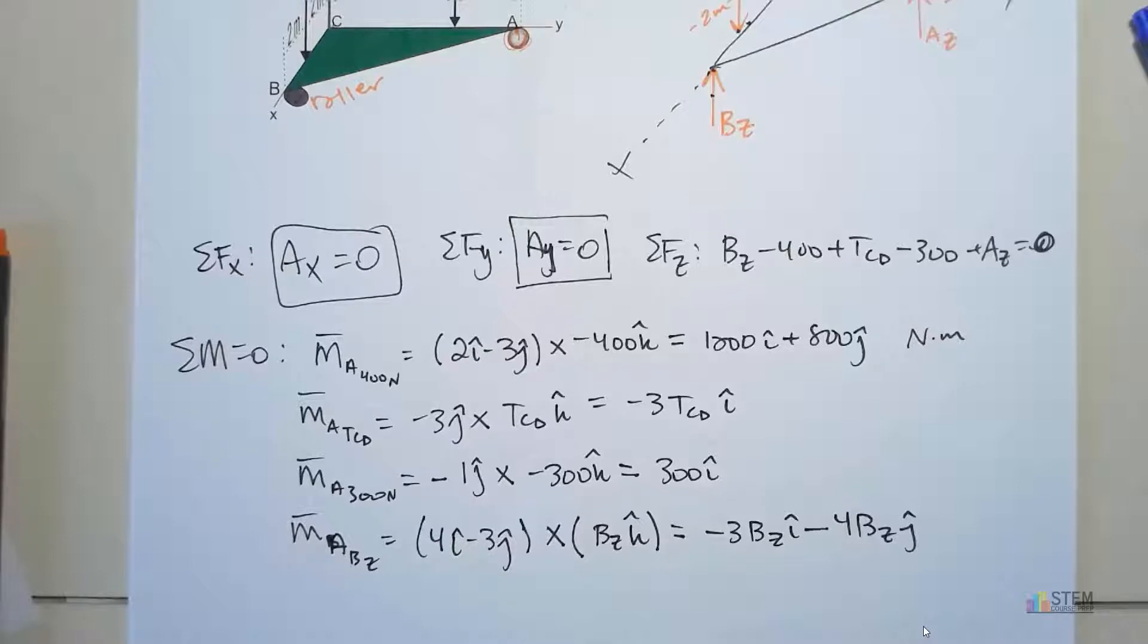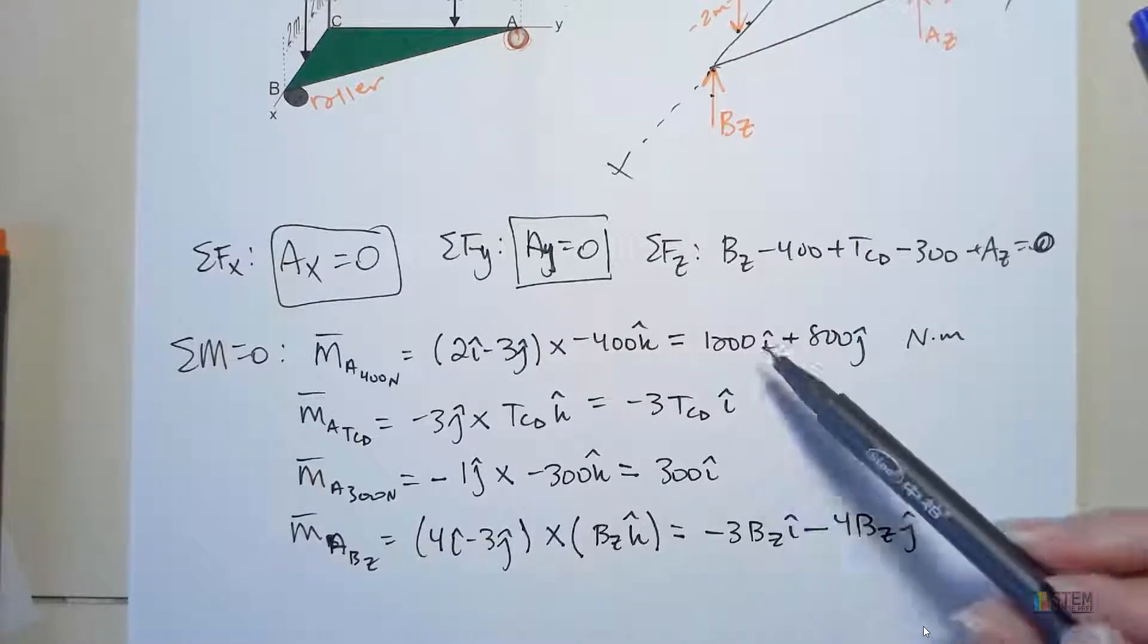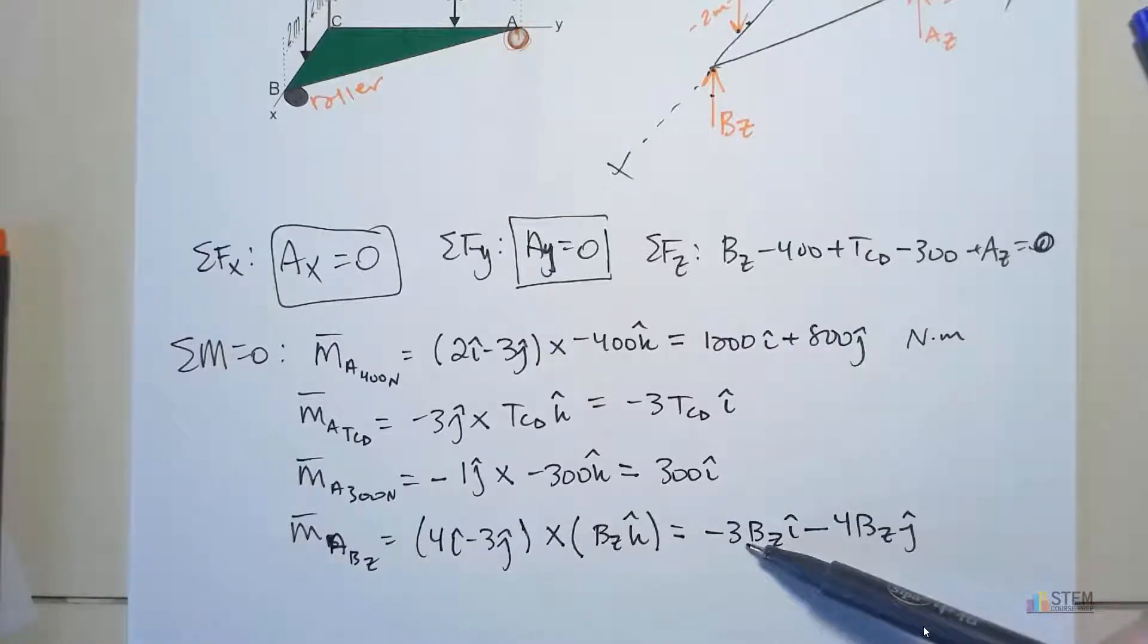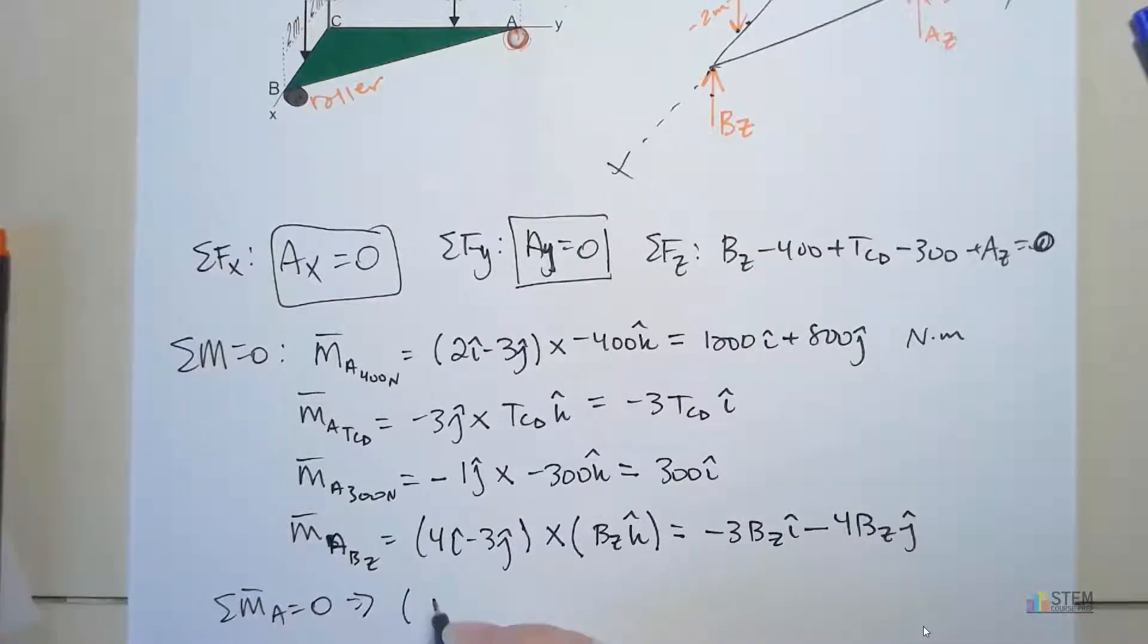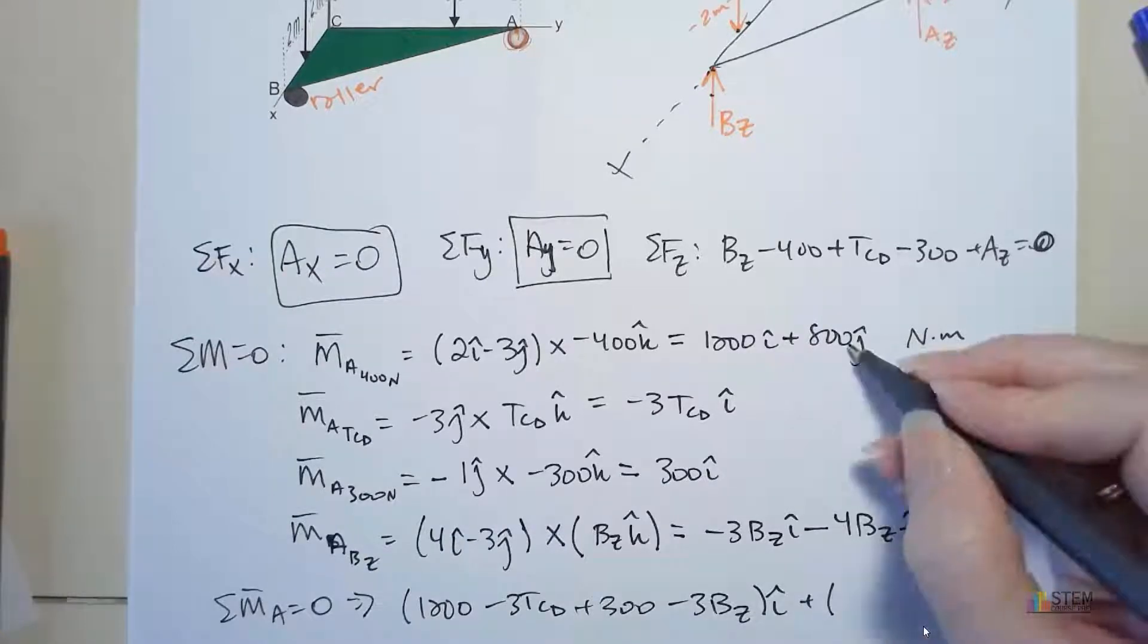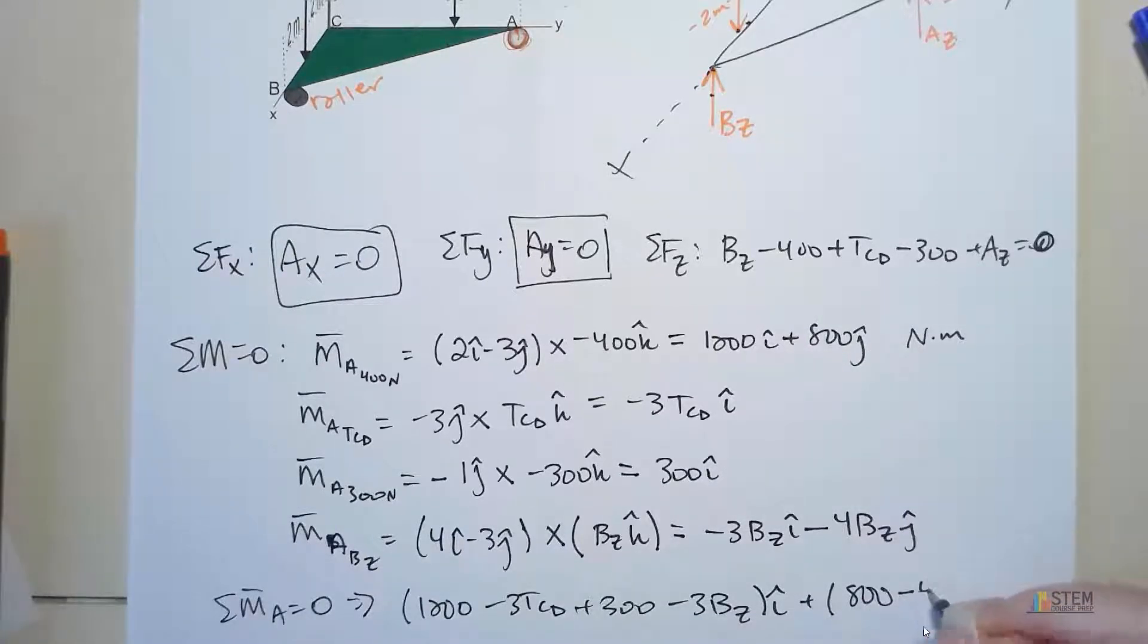So now we've got all of this. What do we want to do now? We need to find the sum of all that. We're going to sum up the like components. All of the I terms go together, the J terms go together, and then we'll set that equal to zero. So let's group up the I terms: 1200 minus 3TCD plus 300 minus 3BZ, that's I. And then for J, we've got 800 and then minus 4BZJ. That equals zero.